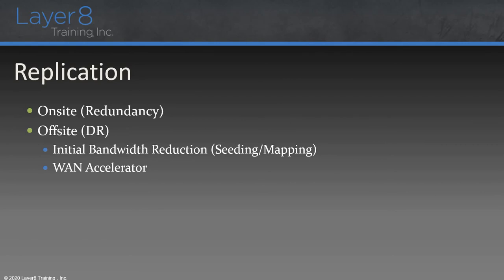Veeam also has its own proprietary WAN accelerator, used to reduce bandwidth across the WAN. The WAN accelerator is used for two features: replication, where it reduces replication bandwidth by using a cache of data blocks so we don't transfer blocks across the WAN if they already exist in the cache; and the backup copy feature — when copying backups across the WAN to an off-site location, the WAN accelerator can reduce bandwidth. This is a native WAN accelerator feature in Veeam, rather than requiring third-party products.